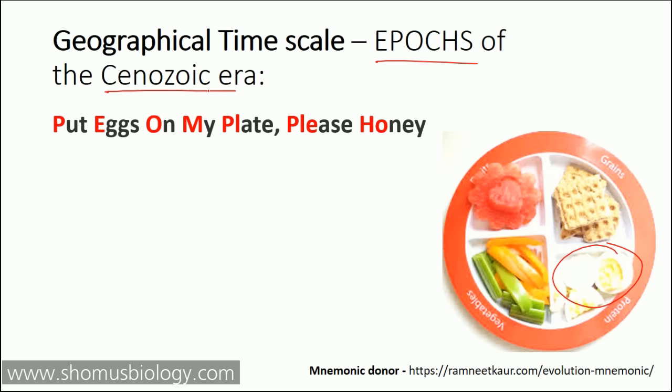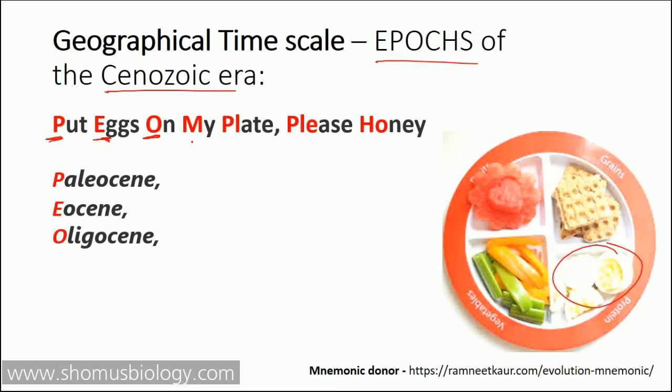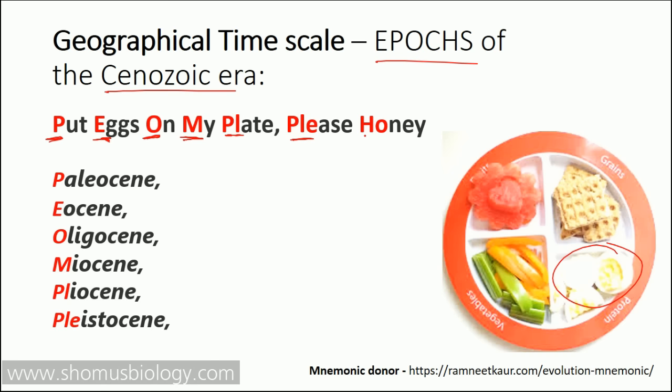The Cenozoic era starts with 'P' for Paleocene, then 'E' for Eocene, then 'O' for Oligocene, then 'M' for Miocene, then 'Pl' for Pliocene, then 'Ple' for Pleistocene, and then 'Ho' for Holocene. So 'Put eggs on my plate please honey' gives you Paleocene, Eocene, Oligocene, Miocene, Pliocene, Pleistocene, Holocene — just by remembering the breakfast plate.